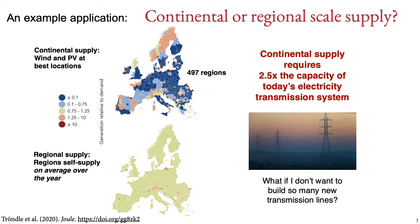This continent-scale system requires a lot more transmission capacity than we have in today's power system. What if we don't want that? We can add a constraint to the model to say that each region must supply itself with renewable electricity on average over a full year. As you can see in the bottom map, most places now generate exactly as much as their demand over the year on average, with the exception that some places still generate a little bit more — for model internal reasons, such as large hydropower plants in the Alps which we assume exist anyway.